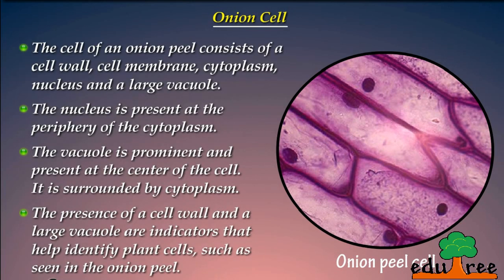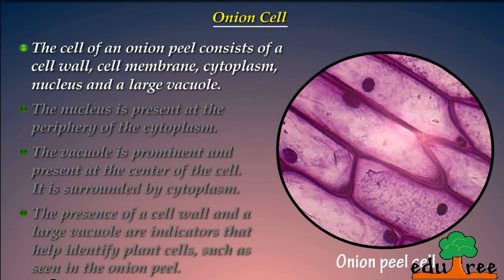The cell of an onion peel consists of a cell wall, cell membrane, cytoplasm, nucleus, and a large vacuole.